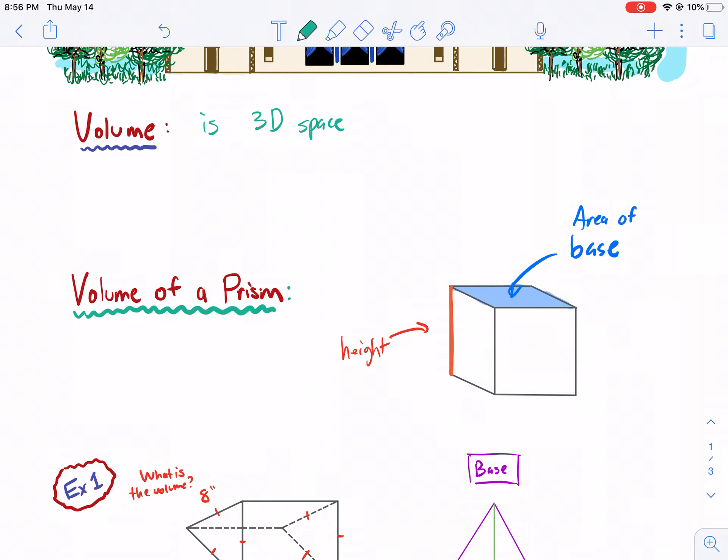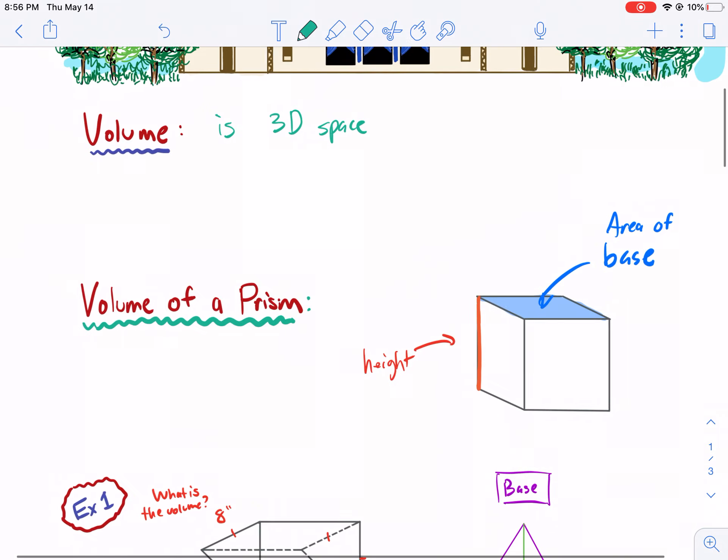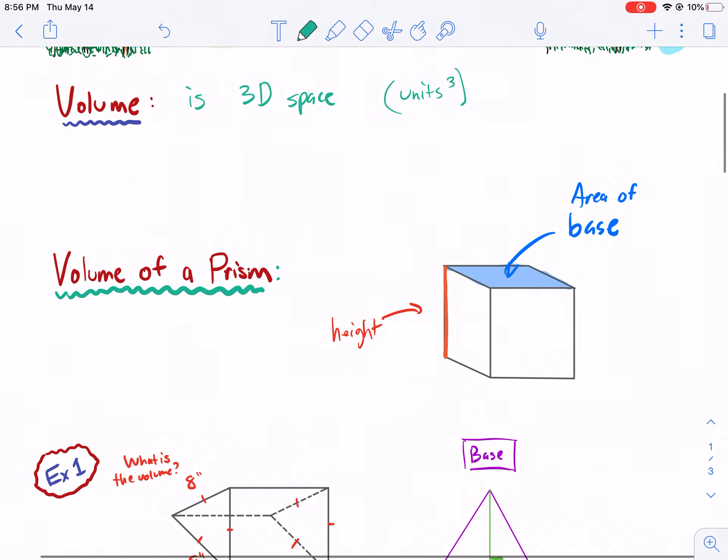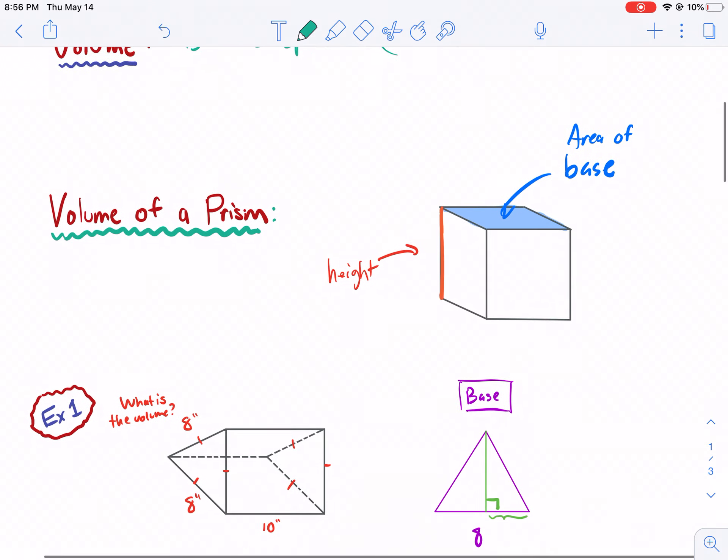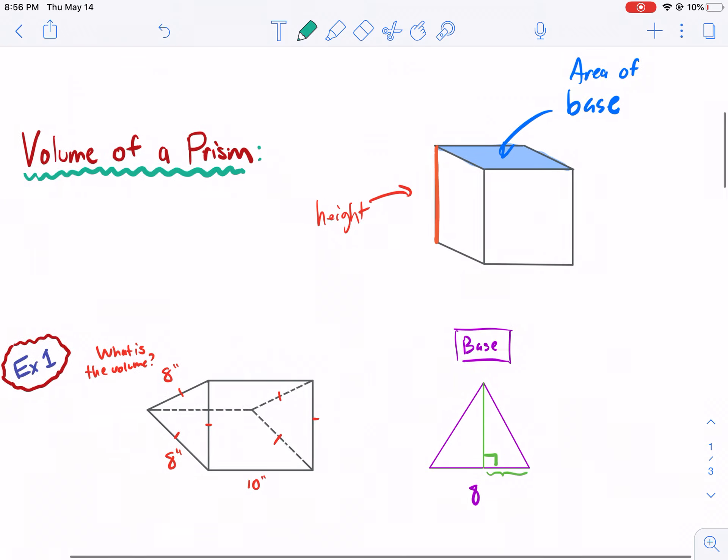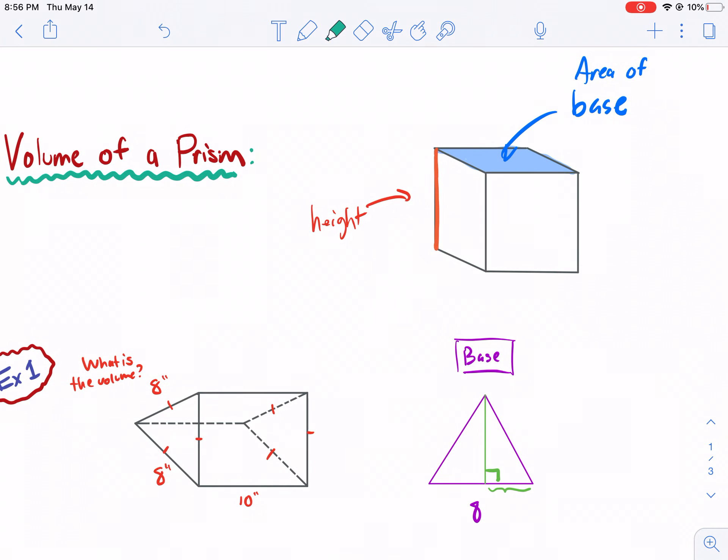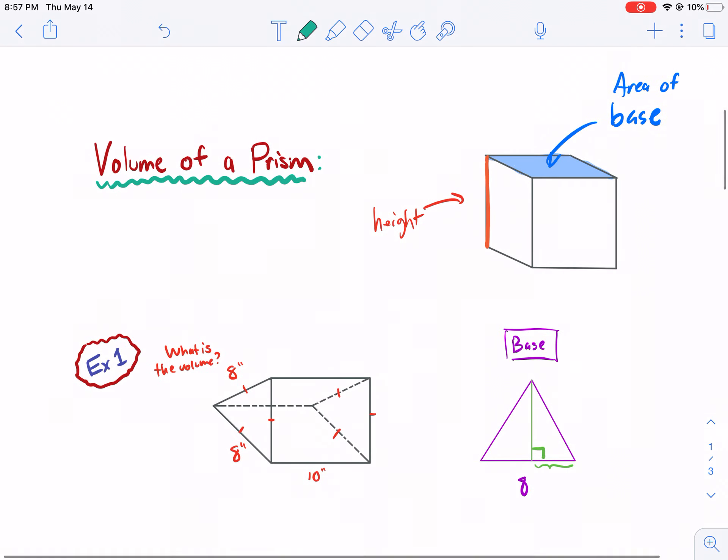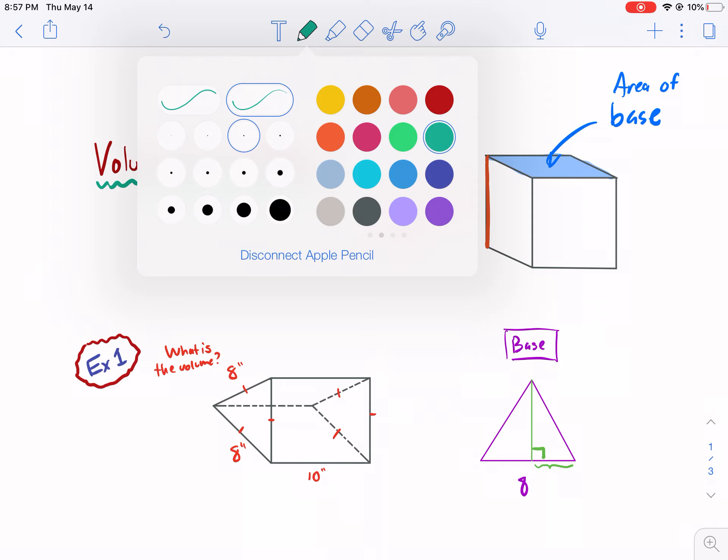Now, the volume of a prism is pretty simple. When we're talking about volume, we're talking about units cubed. That's just something to keep in mind because we're talking about three dimensions. A prism, as we know, has two bases and it has rectangular sides. So if I take a look here, all these sides are rectangles. But with a rectangular prism, really any of the sides can be the base. Now the volume of a prism is much more simple than you think.